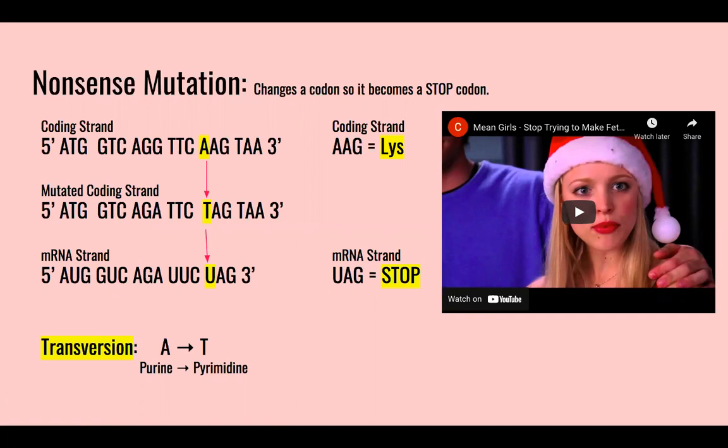This mutation is a transversion, which means A, a purine, is changed to T, a pyrimidine. You can see the short clip of Regina George acting as a nonsense mutation and putting a premature stop to Gretchen's use of the word fetch.